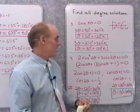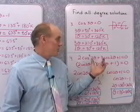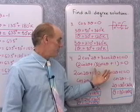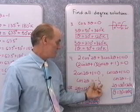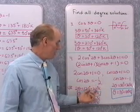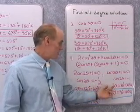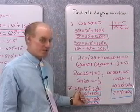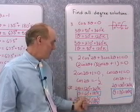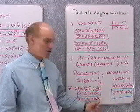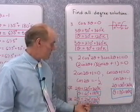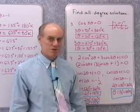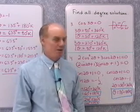So for a quadratic equation with multiple angles, factor it, set each factor equal to zero, write all solutions for the multiple angle, then divide to get expressions for just the angle theta.